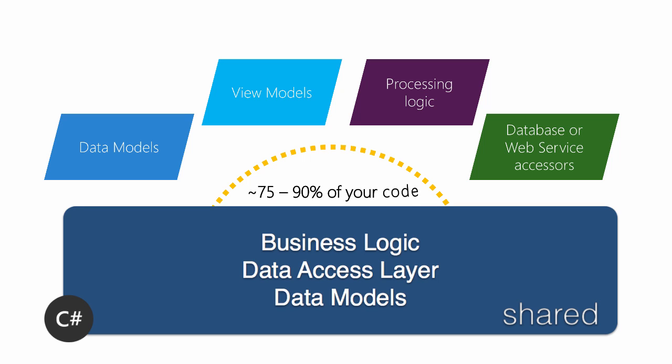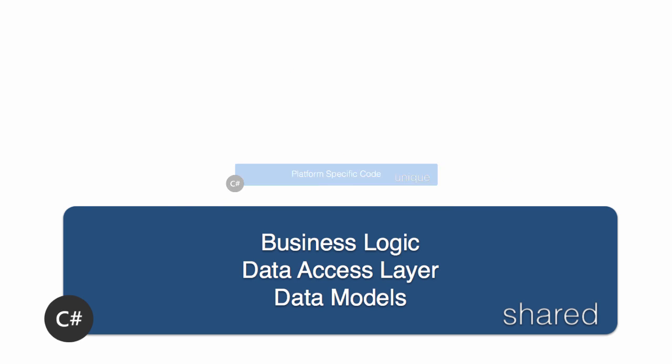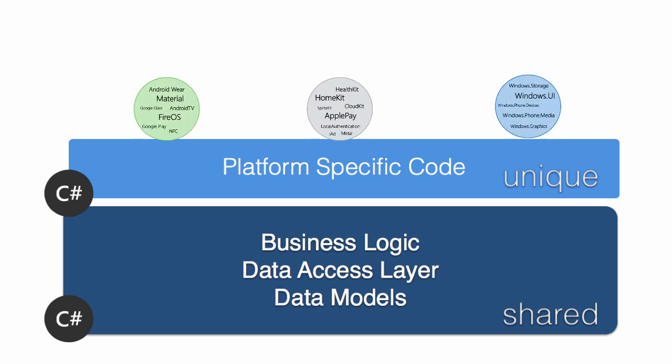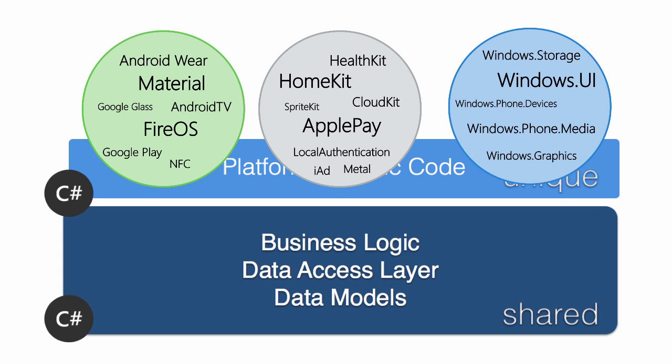This is often about 75% to 90% of our codebase, depending on how complicated the application is. That still leaves anywhere from 10% to 25% of our codebase that ends up being platform-specific, defined in a platform-specific project targeting iOS, Android, and Windows Phone. This is where you take advantage of something platform-specific — maybe you'd like to use the NFC APIs in Android, or the TouchID API in iOS, for example.